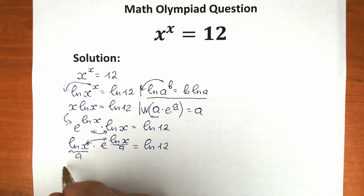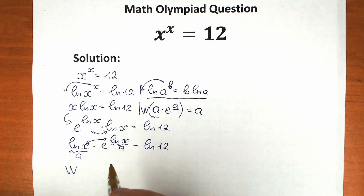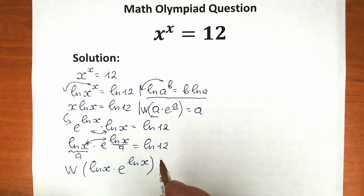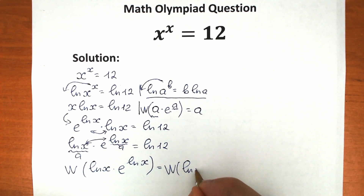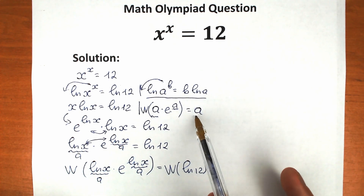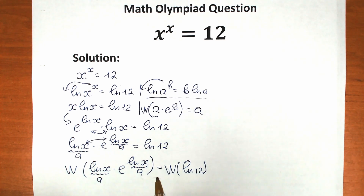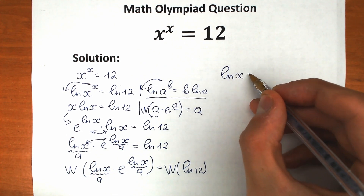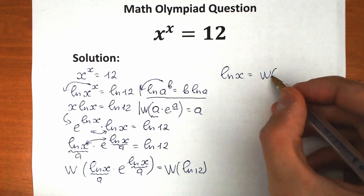We can now apply the Lambert W function to both sides: W(ln(x) · e^(ln x)) = W(ln(12)). Since the left side matches the form a·e^a with a = ln(x), applying W gives us simply ln(x). So we have ln(x) = W(ln(12)).